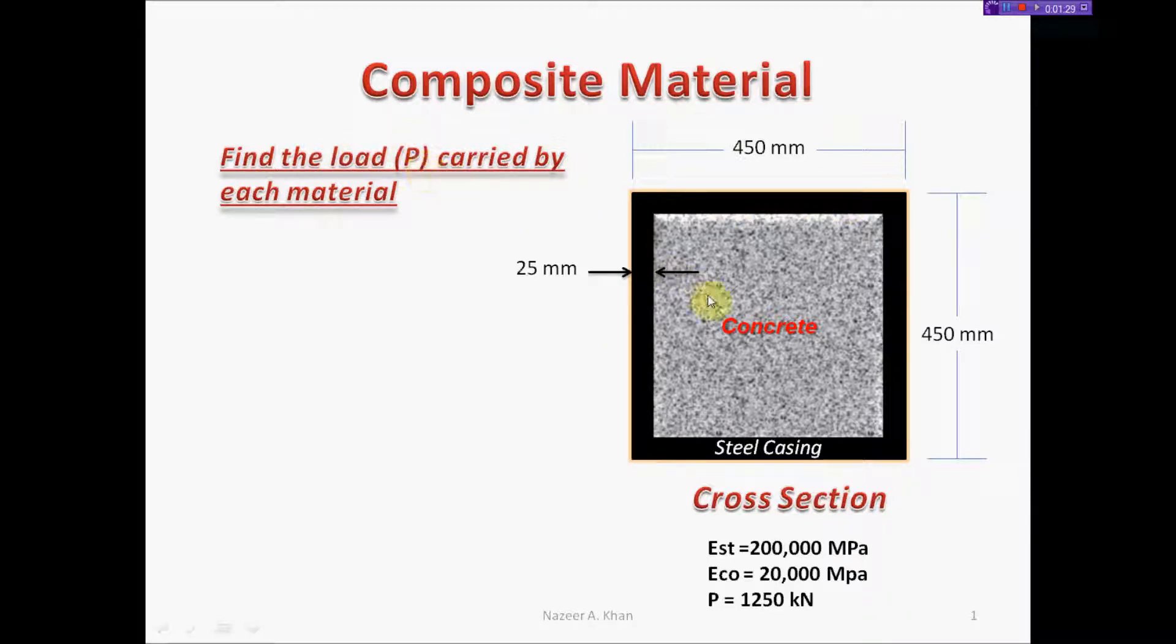We're asked to calculate the load that each material carries individually. We'll use three formulas. The first is n = E_st / E_co, a ratio of the modulus of elasticity of steel divided by concrete. This gives a unitless number representing the ratio between the two materials.